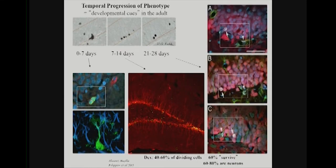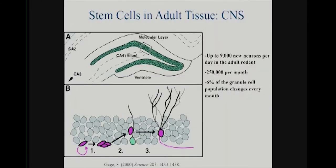If you look about four weeks later, you've got your BRDU stain now in white, and you can see quite mature expression of processes going out and testing local tissue. Not all of them survive — some die — and they're not all neurons; as befitting a stem cell, they give rise to some glia as well. So in the adult rodent, it's thought that you generate up to 9,000 new neurons per day, about a quarter million per month. The newborn cells die at a higher rate than the cells that are already there, but probably about 6% of the dentate gyrus is different every month. That's a pretty remarkable shift.